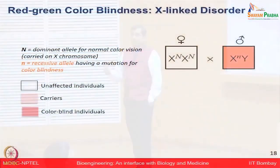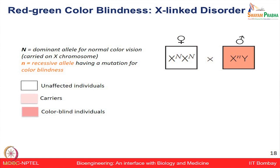Let us think about red-green color blindness. For color blindness to happen, this gene is on the recessive allele, which we denote with a small n. If an individual is unaffected with normal vision, we show that with a white square. If a carrier, we show it with a light shade; if color blind, with a dark shade. A normal phenotype means N and N on both chromosomes, and carrying the recessive allele small n leads to the disorder.